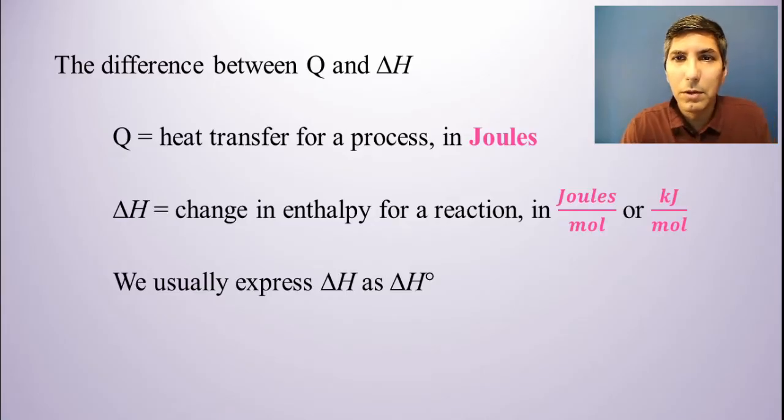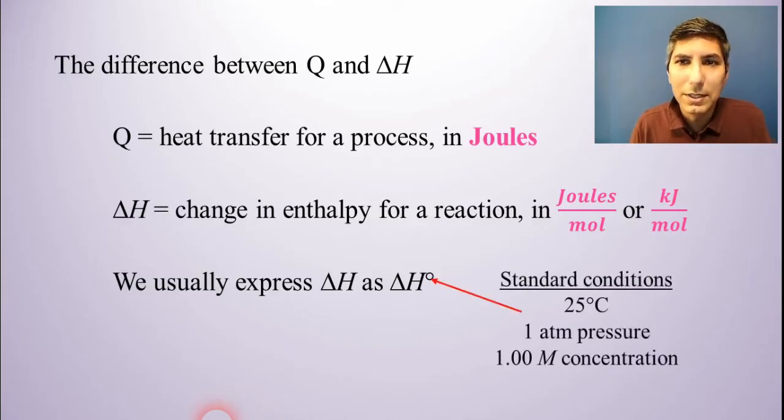Now, normally, in these problems that we work, we're normally going to express delta H as delta H with this little degree sign here. Now, I think this is the first time that we're looking at this in this AP chemistry course, so it is worth it to look at what that degree sign actually means. When you see that degree sign on a value, and it's not just going to be delta H, it'll be other things later on in this course, it's referring to the fact that we're at standard conditions. And these are the standard conditions that are most common in laboratories if you go around the world. So we're talking about standard conditions which are 25 degrees Celsius, pretty close to what most laboratories will be set at, about one atmosphere pressure, and 1.00 moles per liter concentration in the case of any solutions that you might be working with. So if you see that degree sign, you know that we're at standard conditions. And to make our lives easier, usually we just deal with standard conditions.